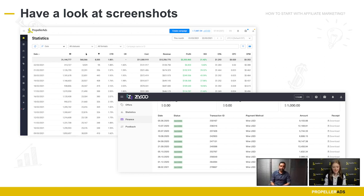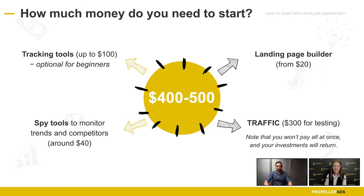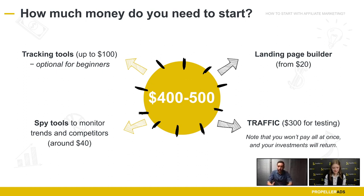How much money do you need to start as an affiliate marketer? We've grouped expenses by the platforms and sources you'll work with. Traffic is the alpha and omega of affiliate marketing — it's the audiences and users you're looking to target. Traffic comes from traffic sources; PropellerAds is an example. Your goal is to find the appropriate traffic for your offer and make it convert. A good starting point for testing campaigns is around $300.